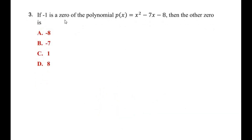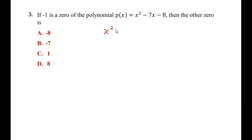The third question: if minus 1 is a zero of the polynomial p of x equal to x squared minus 7x minus 8, then the other zero is what? They have already given that one zero of this polynomial is negative 1. We need to find the other zero using the factorization method — that is, splitting the middle term — and write x squared minus 7x minus 8 equal to 0.